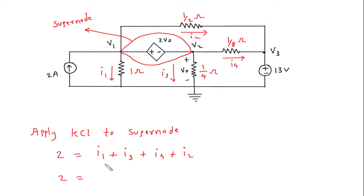Now this I1 is equal to V1 minus 0 by 1. So this will be V1 plus I3. I3 will be V2 minus V3 by 1 by 4, plus I4. I4 will be V1 minus V3 by 1 by 2, plus I2. I2 will be V2 by 1 by 8.